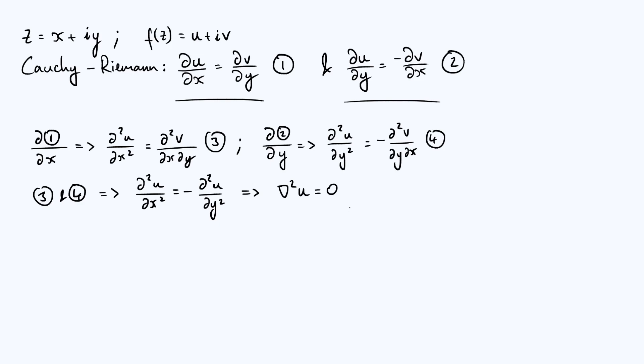Or if we want to put everything on the same side, we get ∂²u/∂x² plus ∂²u/∂y² is 0. In other words, the Laplacian ∇²u is equal to 0. And therefore, the real part of f, in other words u, has to obey Laplace's equation. How about the imaginary part v?